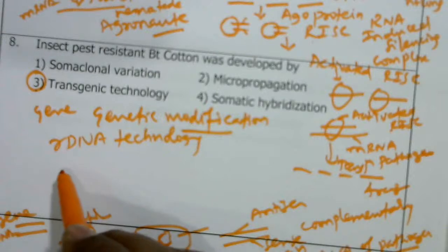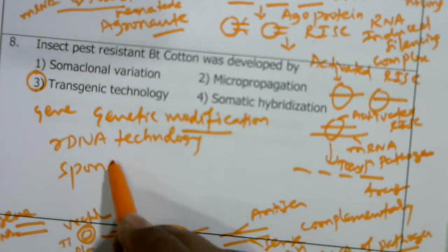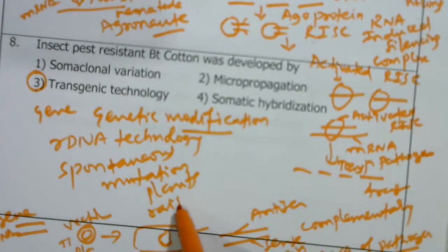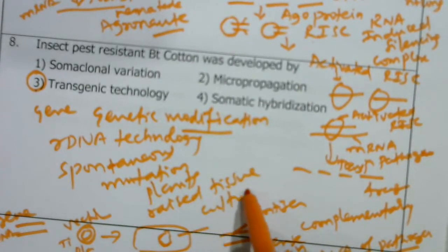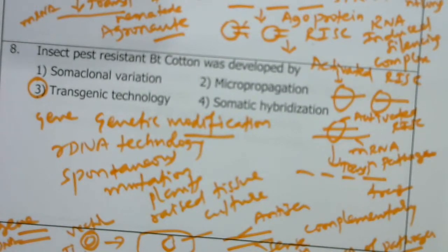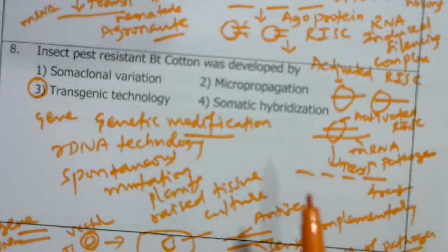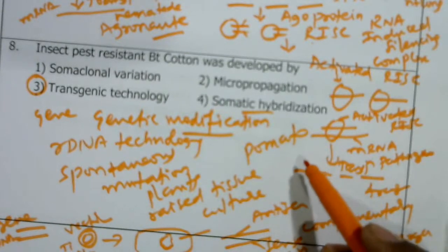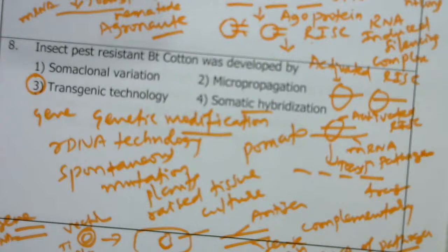Somaclonal variation refers to variations produced through spontaneous mutation in plants raised through tissue culture. Micropropagation is the technique of producing thousands of plants through tissue culture. Somatic hybridization or protoplast fusion — the best example is pomato: potato protoplast and tomato protoplast are fused after dissolving the cell wall with cellulase and pectinase enzymes to produce a somatic hybrid.